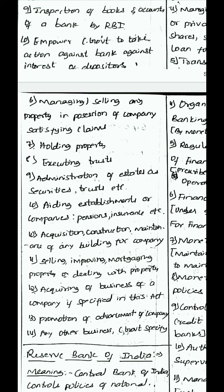Banks can execute trusts, administer estates as securities and trusts. They can aid establishments or companies with pensions, insurance, etc., and manage the salary of establishments or companies. They can acquire, construct, or maintain any building for the company. They can sell, improve, mortgage, or deal with property. They can acquire the business of a company if specified in the act, and promote or advertise a company, along with any other business the central government may specify. These are the activities permitted to a bank.